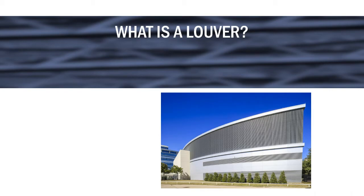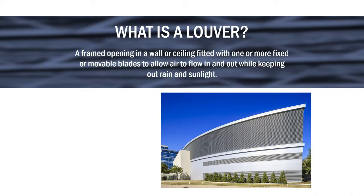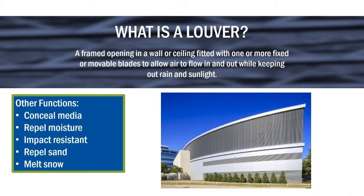In today's era of sustainable buildings, there's a growing need to supply buildings with fresh outdoor air, meaning the need to protect outdoor air and building exhaust openings with louvers will continue to flourish. But what is a louver? In layman's terms, it's a framed opening in a wall or ceiling fitted with one or more fixed or movable blades to allow air to flow in and out while keeping out rain and sunlight. Louvers are used wherever there's a need for creating resistance to rain water, excessive noise, hurricane-type winds, or a combination of these problems, while also ensuring proper airflow.